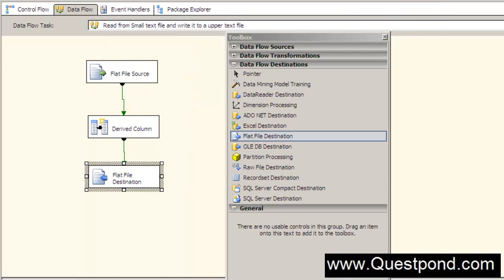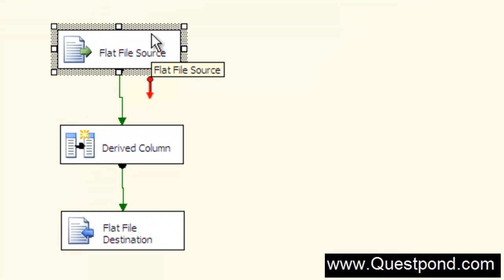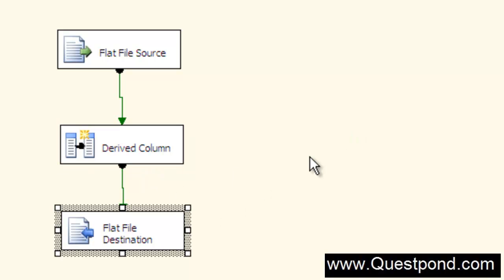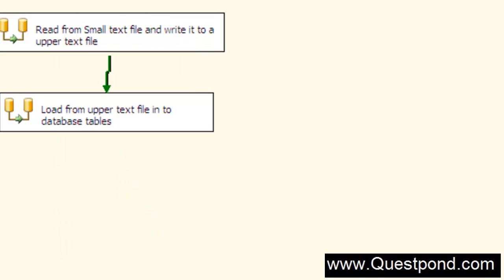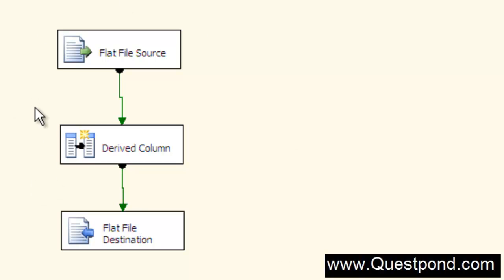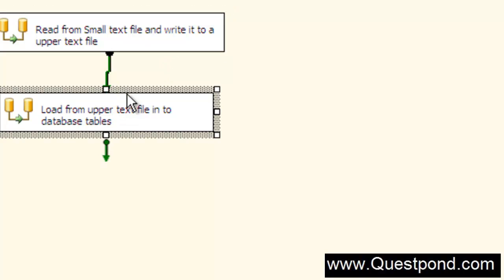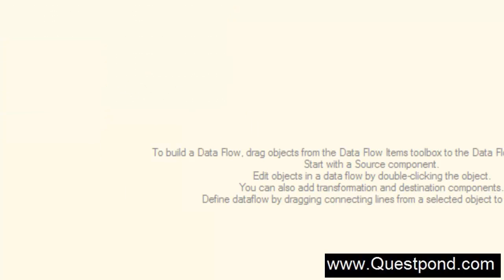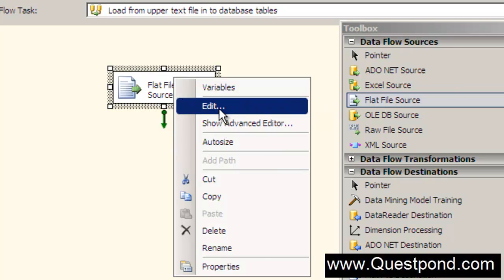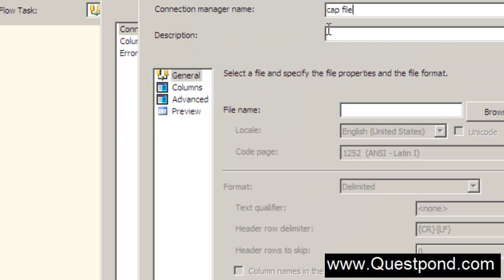Finally, we'd like to create a new text file with the uppercase data called the capital text file. Let's connect the capital name derived column to the flat file destination. Edit the destination - delimited, name it 'upper text file', browse to the capital text file. The capital text file currently has nothing. We map the capital name derived column to the destination column. We're done with the first control flow - it reads small.txt, creates a derived column in uppercase, and writes it to capital.txt.